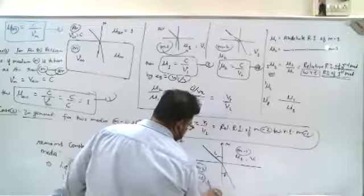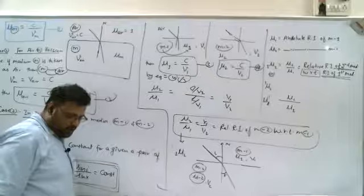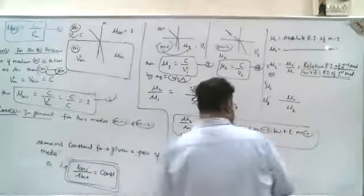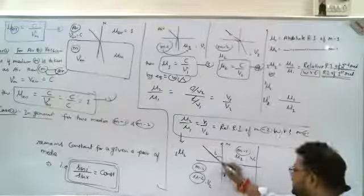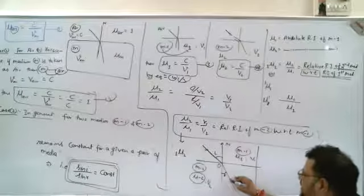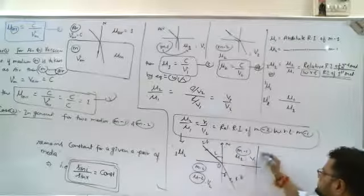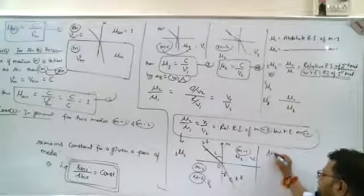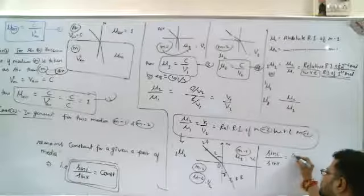Then according to Snell's law, what are we saying? If we apply Snell's law, then the point of incidence, this is incident ray and this is refracted ray. So if we apply Snell's law, what do we have to write?